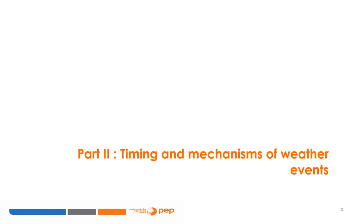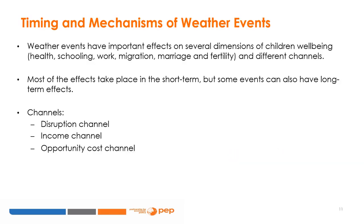Let's now talk about timing and mechanisms of weather events. Weather events can have important effects on children's well-being through several dimensions: health, schooling, work, migration, marriage and fertility, operating through different channels. We will present the main findings of the economic literature on each of these dimensions.